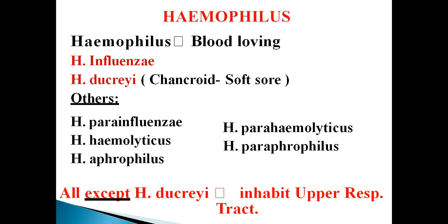The normal species which are pathogenic to human beings are Haemophilus influenzae and Haemophilus ducreyi. Other species include Haemophilus para-influenzae, Haemophilus haemolyticus, Haemophilus aphrophilus, Haemophilus para-haemolyticus, and Haemophilus paraphrophilus. These five are non-pathogenic to human beings.